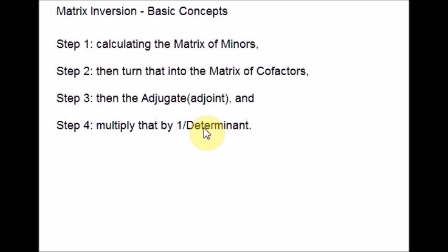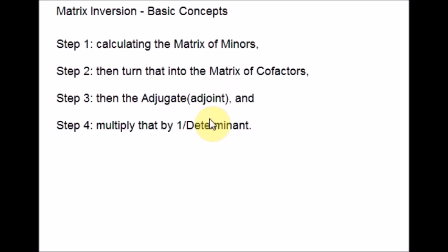So these are the 4 steps to find the inverse of any matrix. Before going directly to the examples, I will explain these concepts first: matrix of minors, matrix of cofactors, adjoint or adjugate, and 1 over determinant. After practicing all these concepts separately, we can do some examples and get more practice on finding the inverse of a matrix.